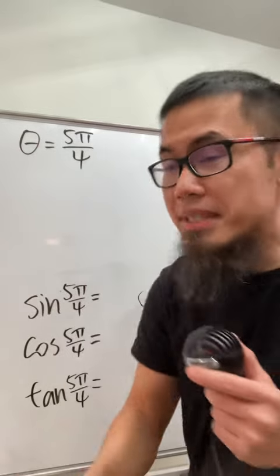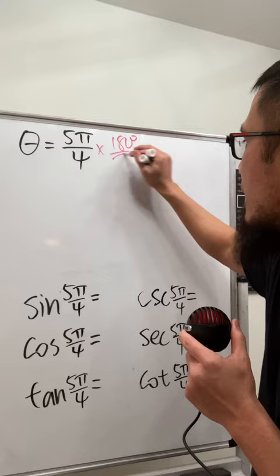Learn trick in one minute. Theta is equal to 5 pi over 4, and let's multiply this by 180 degrees over pi. It's easier to deal with degrees, and let me tell you this is going to be 225 degrees.